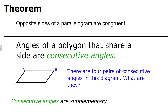Along with the idea that opposite sides of a parallelogram are congruent, we can also say that consecutive angles are supplementary. So if you're asked to solve problems involving opposite sides, you'll make an equation with the two sides equal to one another. If you're dealing with consecutive angles, you'll take the two angle measures, add them together, and they'll equal 180 degrees.